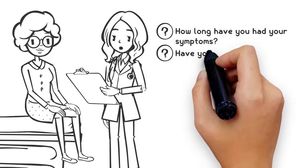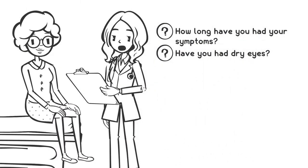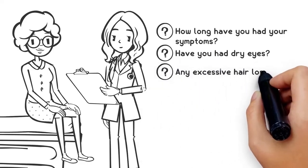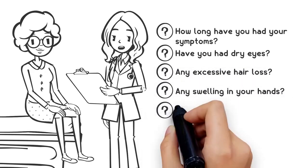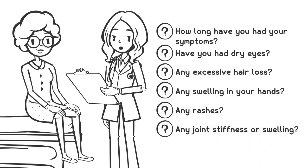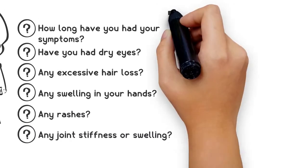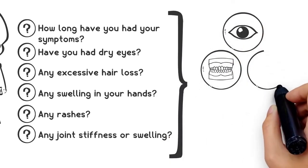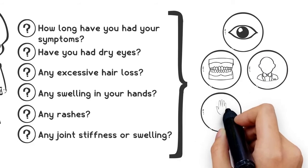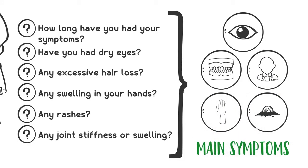Have you had dry eyes, dry mouth, mouth ulcers, or problems with your teeth? Any excessive hair loss? Any swelling in your hands or changes in the skin on your hands? Any rashes? Any joint stiffness or swelling? These are all really important questions because the problems associated with eyes, mouth, hair loss, digits, and rashes are really those main symptoms associated with connective tissue disease.